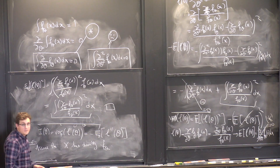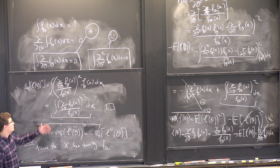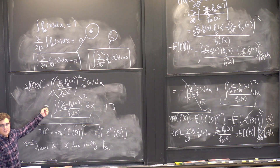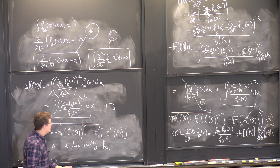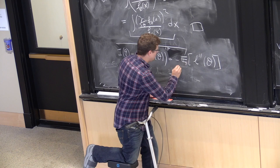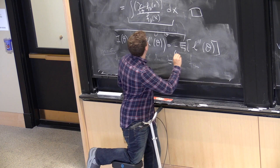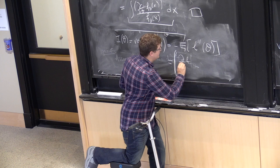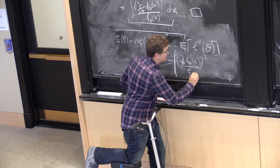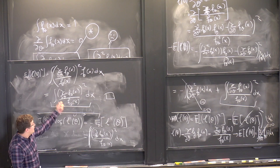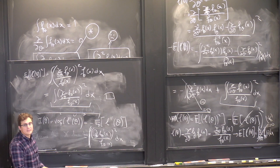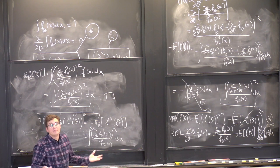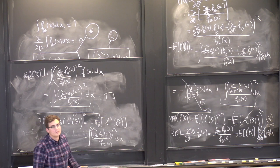On our way, we also found an explicit formula for Fisher information. If x has a density, this is also equal to the integral of the partial with respect to theta of f theta of x, squared, divided by f theta of x. In practice, you have three formulas to choose from when computing Fisher information — pick whichever saves you the most computation.